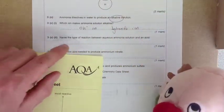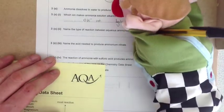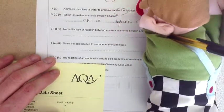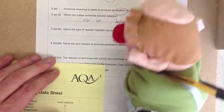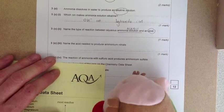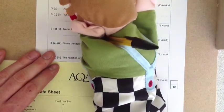Name the type of reaction between aqueous ammonia solution and an acid. We've just said this is an alkali, so if you react an alkali with acid, that reaction is neutralization.